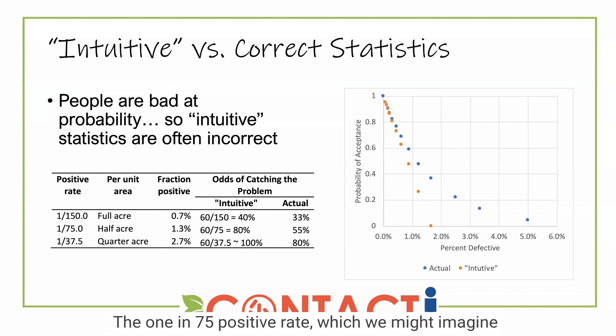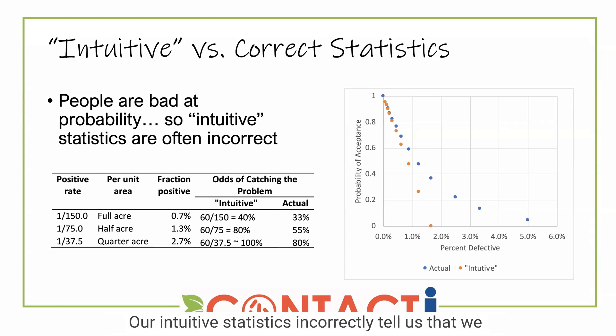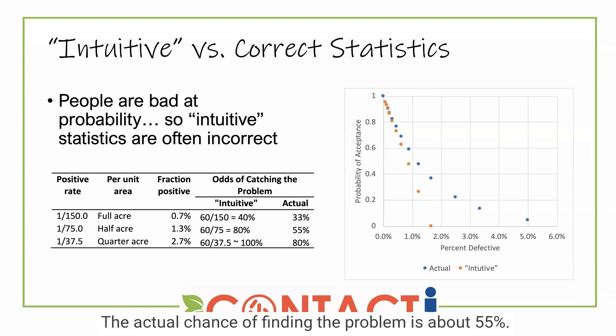The one in 75 positive rate, which we might imagine would be true for a half acre, gives us 1.3 percent positive. Our intuitive statistics incorrectly tell us that we have an 80 percent chance of finding this problem. The actual chance of finding the problem is about 55 percent.